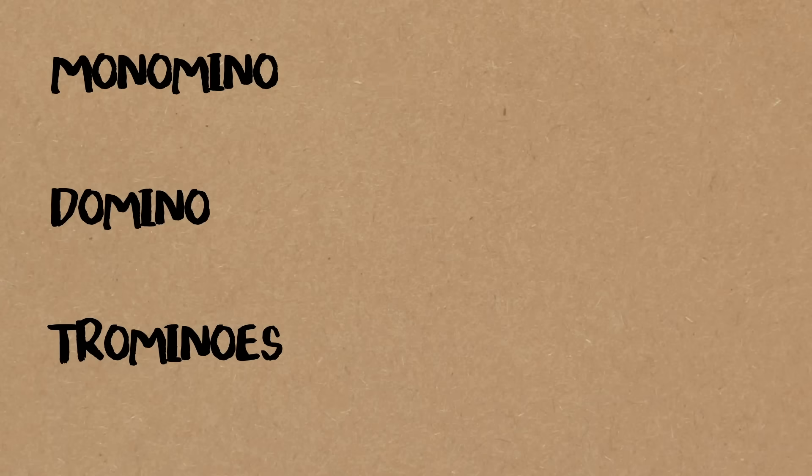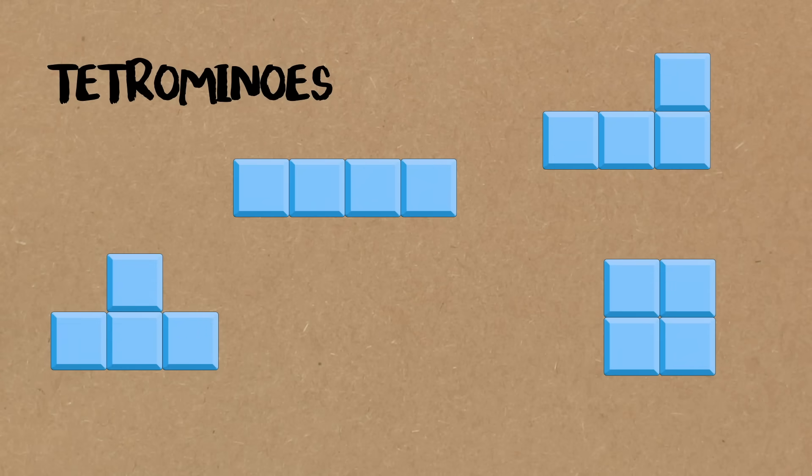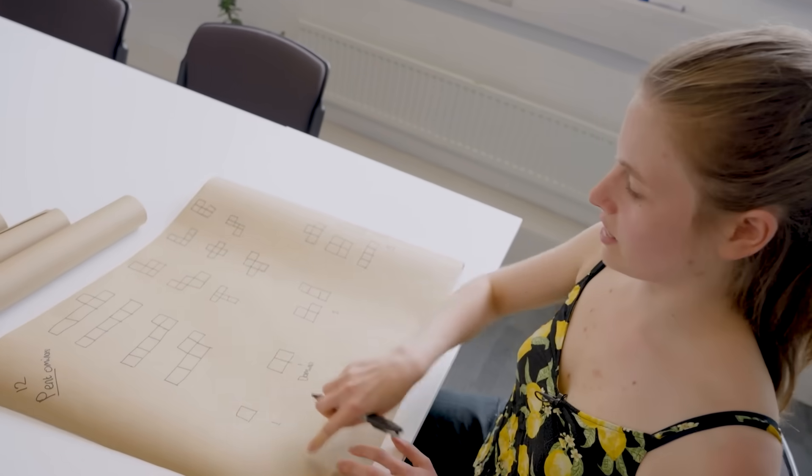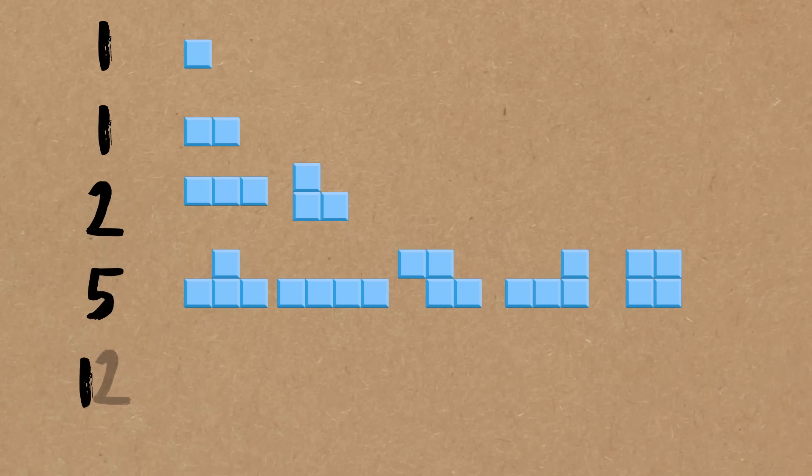So there are 12 pentominoes, called pent because there are five of them. Obviously there's a single one-omino, a single domino. Trominoes, there are two now. And tetrominoes, well there's that one, this one, straight line, this one and baby snake. So these are the five tetrominoes. So we've got our pattern: one, one, two, five, twelve and so on.